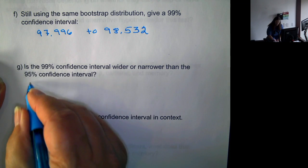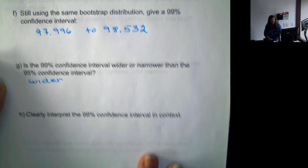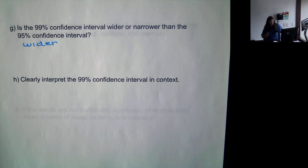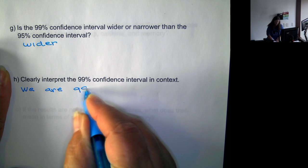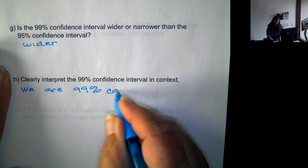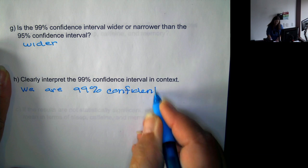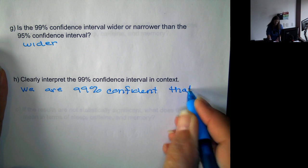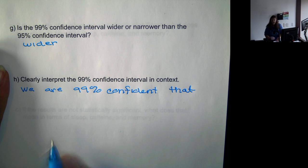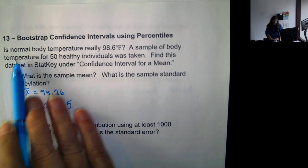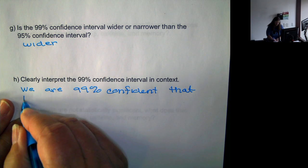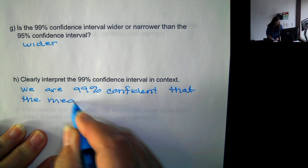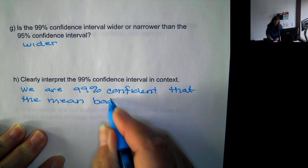We just said that it's wider than the 95% confidence interval. And that's because of the interpretation, which says we are 99% confident that... Again, there's our percentage of confidence. Now we bring in the problem itself, which is looking at normal body temperature.